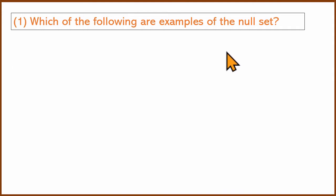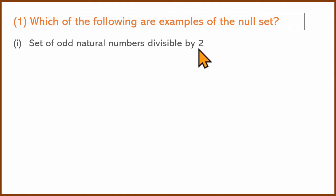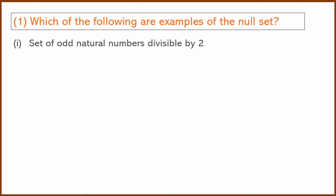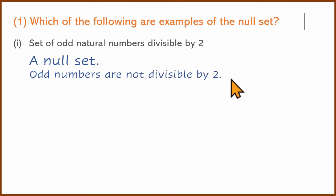What is a null set? First question: Set of odd natural numbers divisible by 2. Odd natural numbers divisible by 2 — actually, no. Why? Odd natural numbers are not divisible by 2. The definition of an odd number is that: 1, 3, 5, 7 — these are not divisible by 2. That's why this set has no elements — it is a null set.